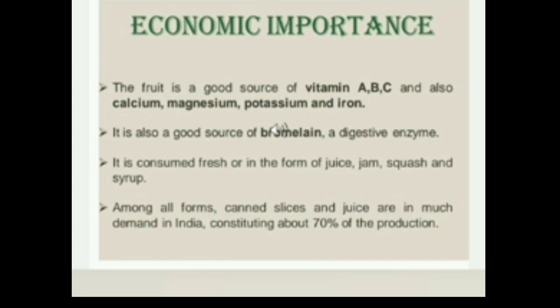Economic importance: The fruit is a good source of vitamins A, B and C, and also calcium, magnesium, potassium and iron. It is also a good source of bromelain, a digestive enzyme. It is consumed fresh or in the form of juice, jam, squash and syrup. Among all forms, canned slices and juice are in much demand in India, constituting about 70% of production.